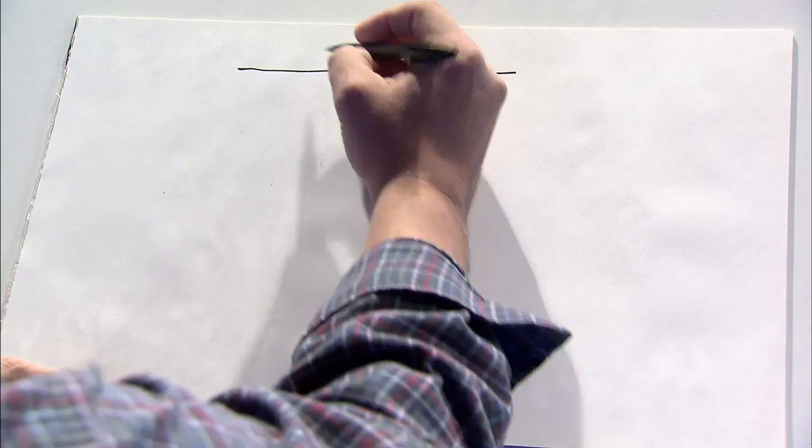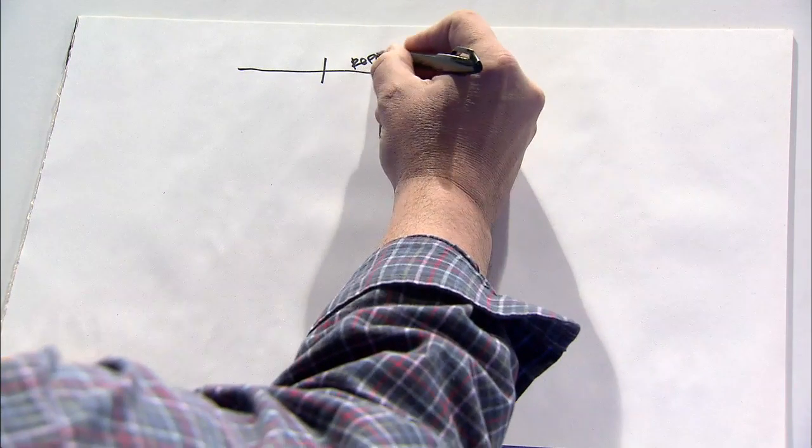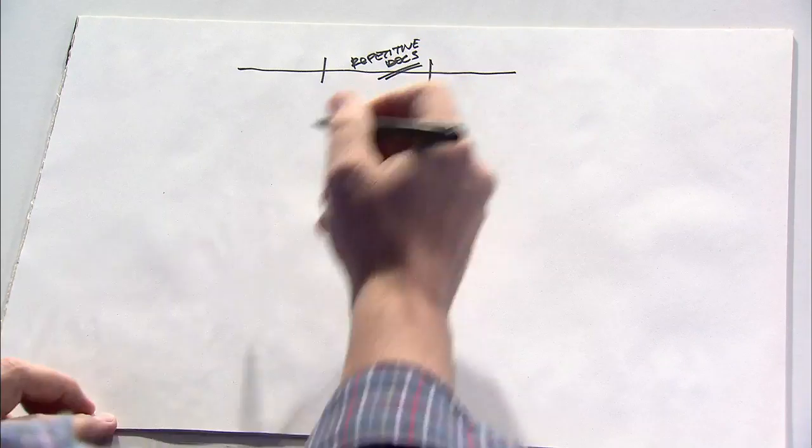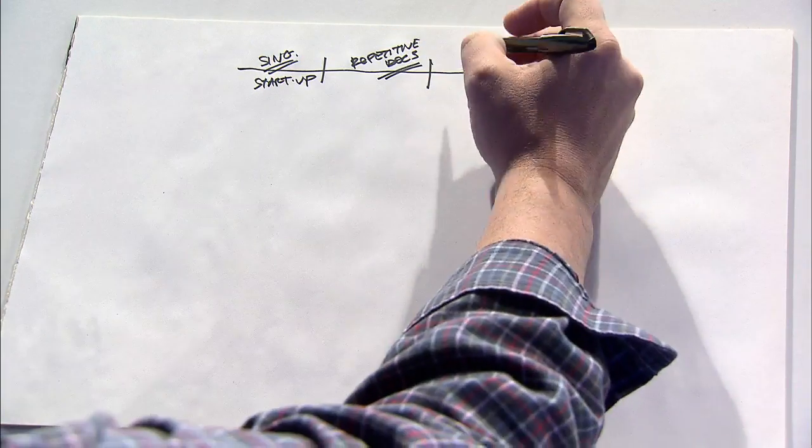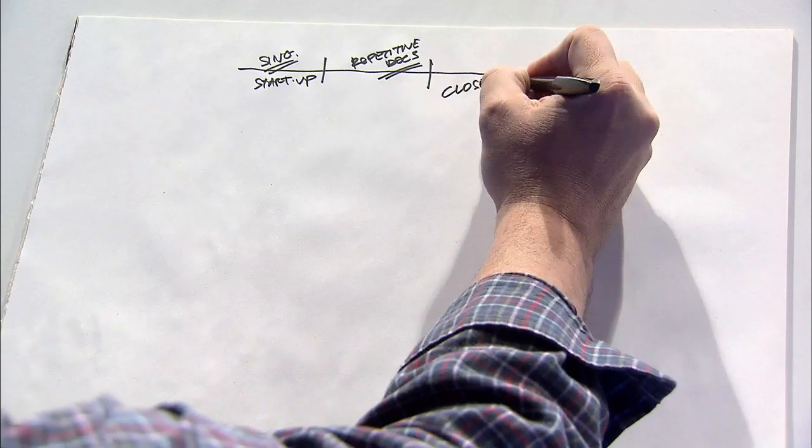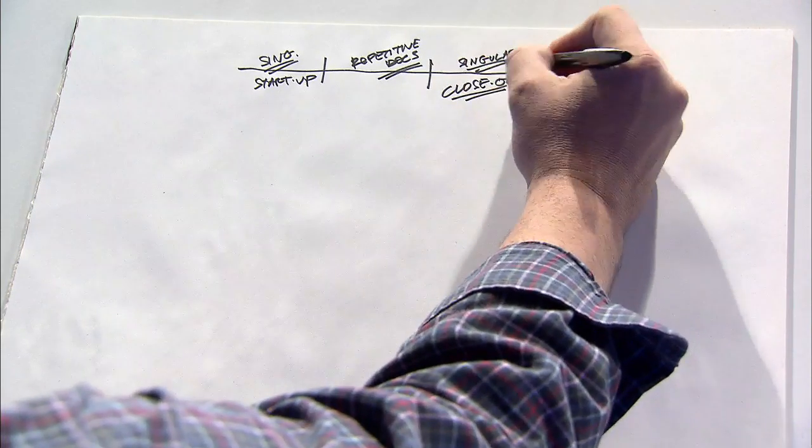On our construction timeline, we've talked about the repetitive documents that occur in the middle, and there are many singular documents in the startup phase. What I'd like to focus on now is the closeout phase, where lots of one-time documents are also executed.